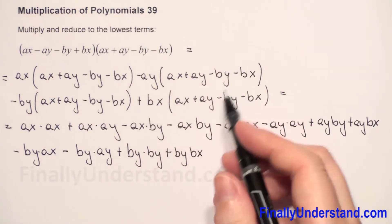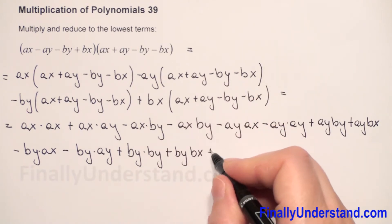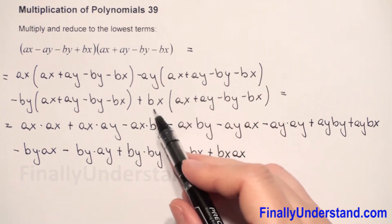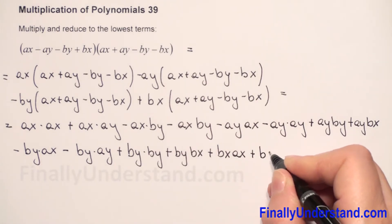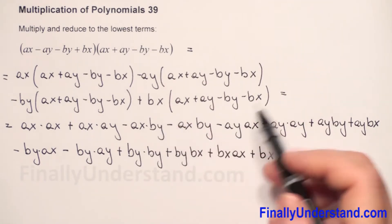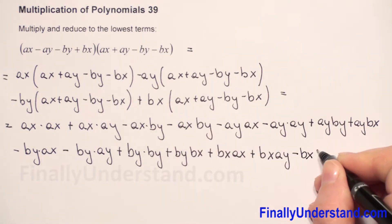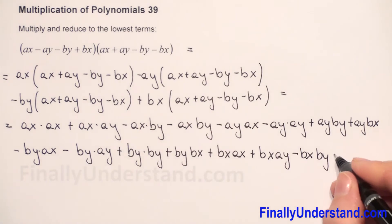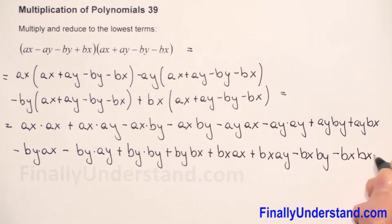And the last expression: we have BX positive times positive, so we will be positive BX times AX. Positive times positive, positive again: BX times AX. Then positive times negative gives negative BX times AY, and positive times negative gives negative BX times BX.